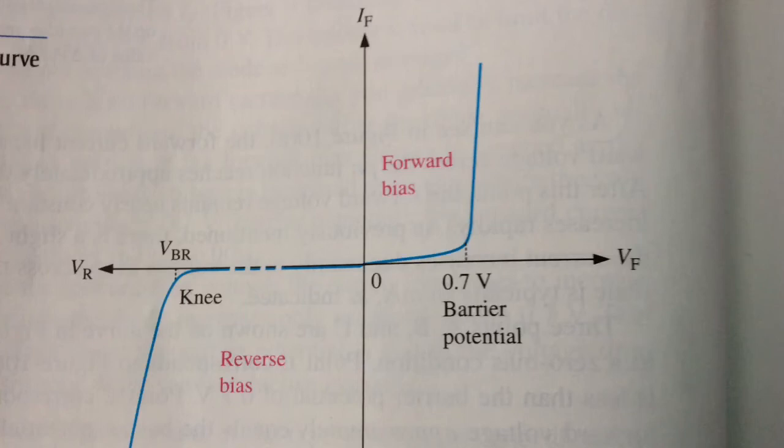When the applied bias voltage is increased to a value where the reverse voltage across the diode reaches the breakdown value, the reverse current begins to increase rapidly.